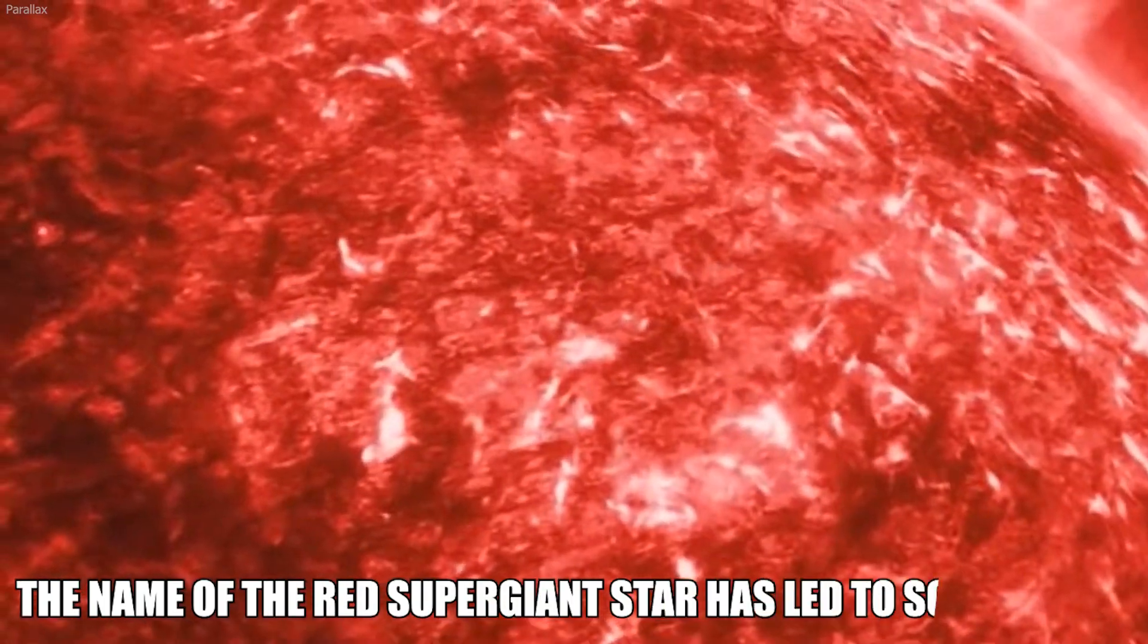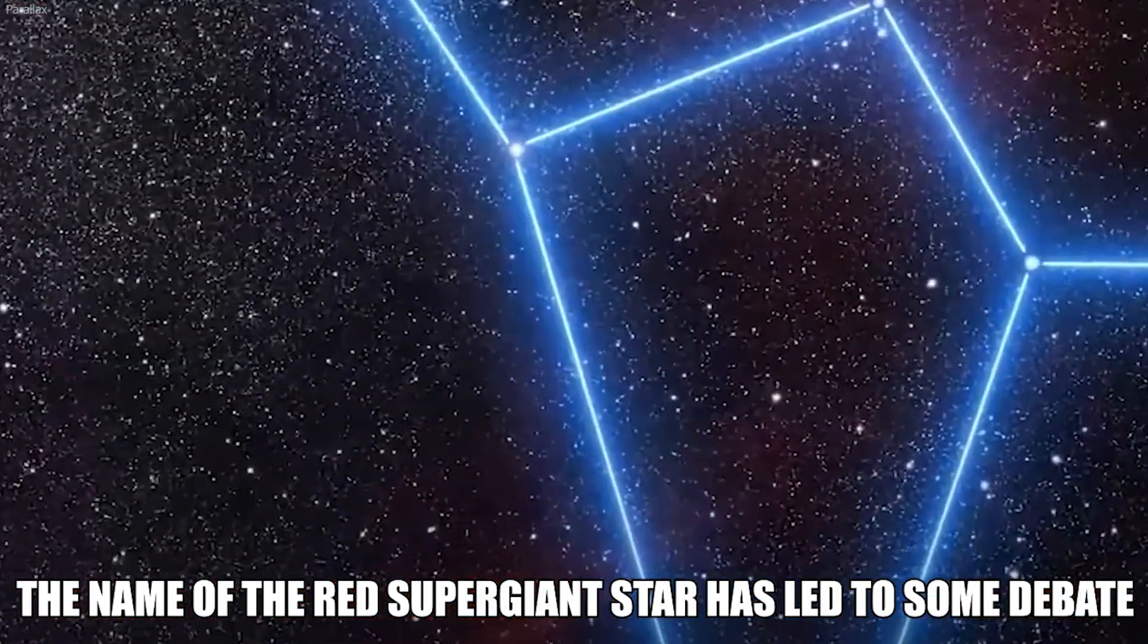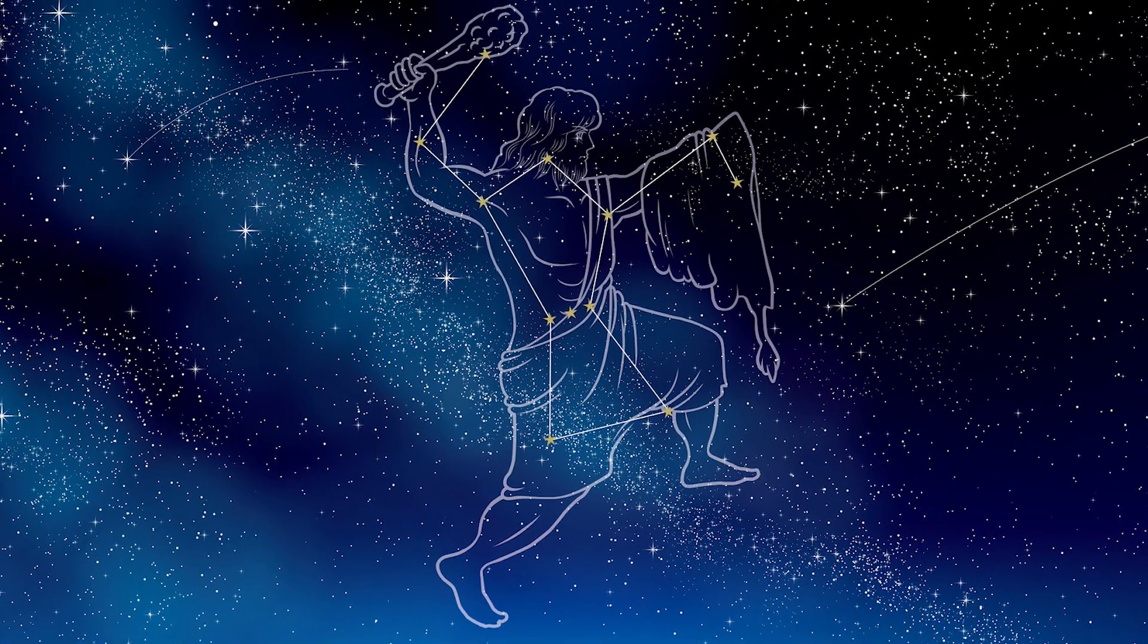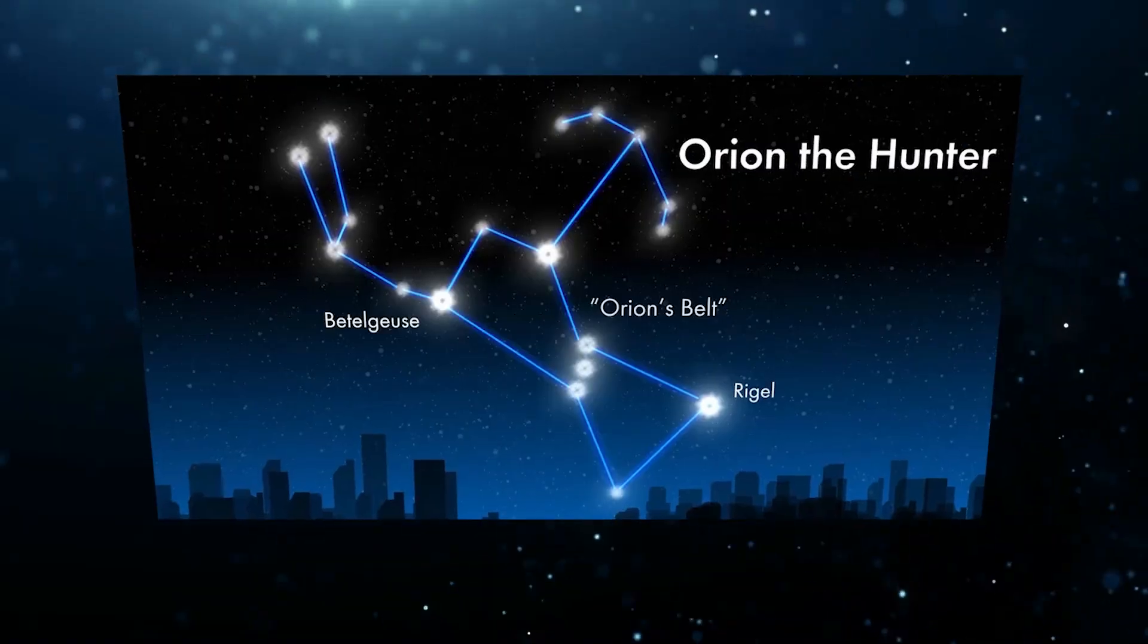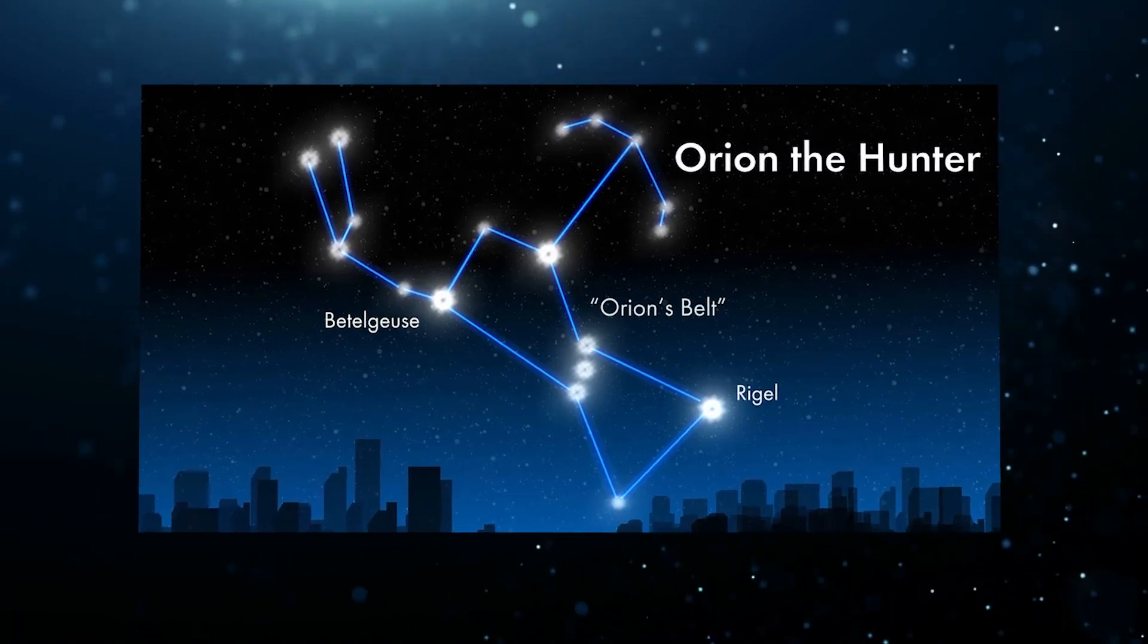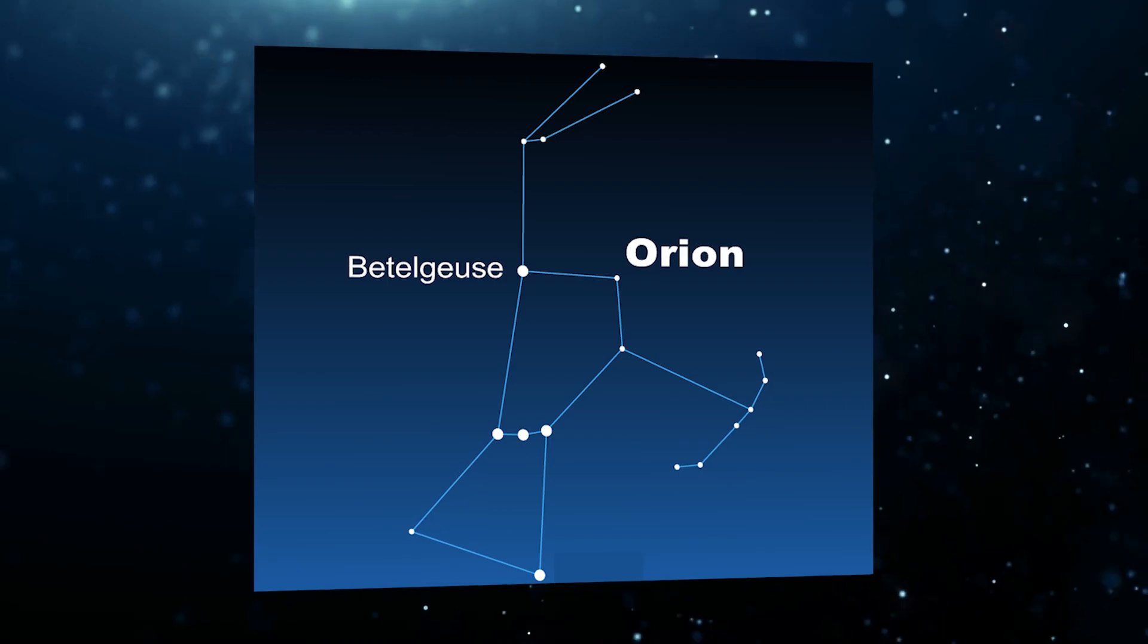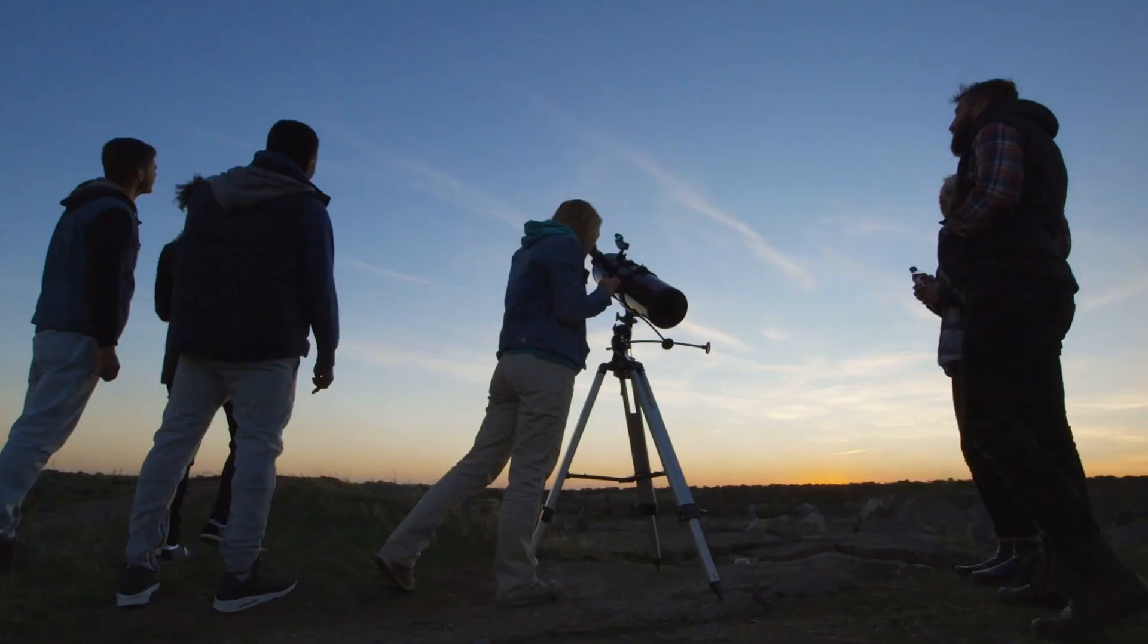The name of the red supergiant star has led to some debate. Belonging to a belt called Orion, which is related to the image of a hunter or warrior in Greek mythology, Betelgeuse has been referred to as the armpit of this hunter. Therefore, the reference between Betelgeuse and the Orion Belt have somewhat of an anatomical relationship.